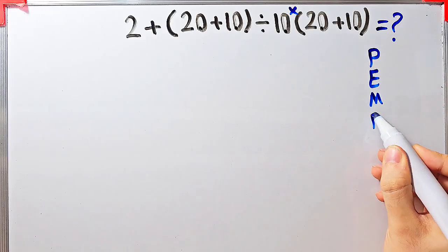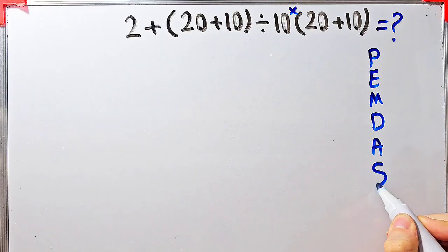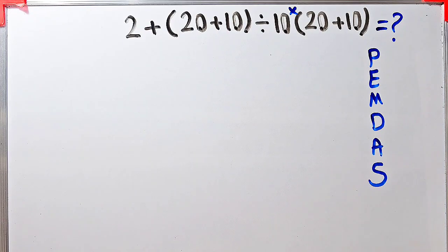PEMDAS shows the priority of the mathematical operations. If you don't pay attention to this rule, you get the wrong answer.